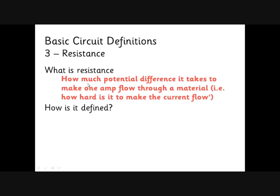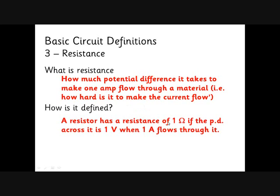So what is resistance? As we've said, it's how much potential difference does it take to make some current - a certain amount of current, we're going to talk about one amp in a minute - but a certain amount of current flow through a material. You've got a sort of general kind of idea of this, hopefully, which is it means how hard it is to make the current flow. The higher the resistance, the harder it is to make the current flow through the material. So our definition is that a resistor has a resistance of one ohm if you need one volt of potential difference to make one amp of current flow through it.